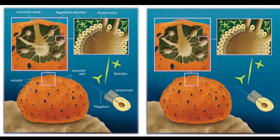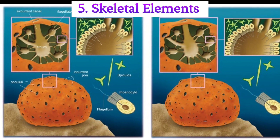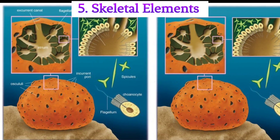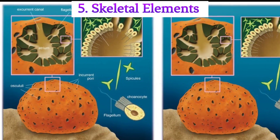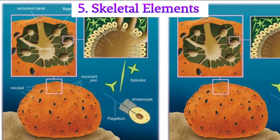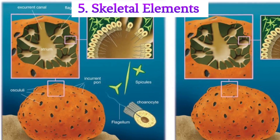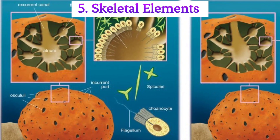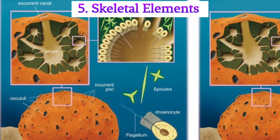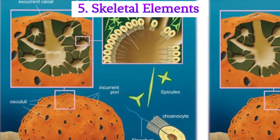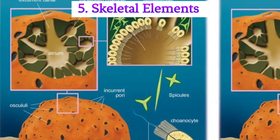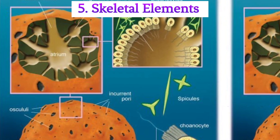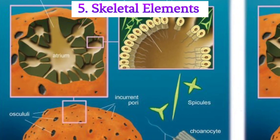Point 5: Skeletal elements. To provide support and protection, sponges have unique skeletal elements known as spicules. These can be composed of different materials like silica or calcium carbonate.